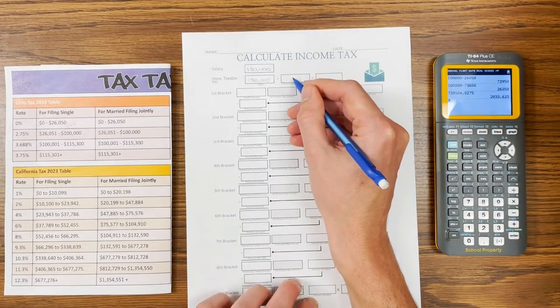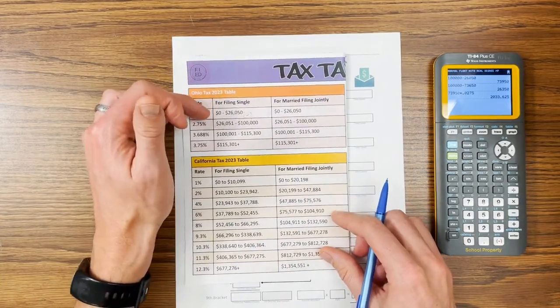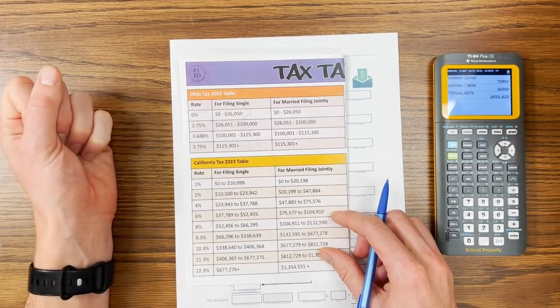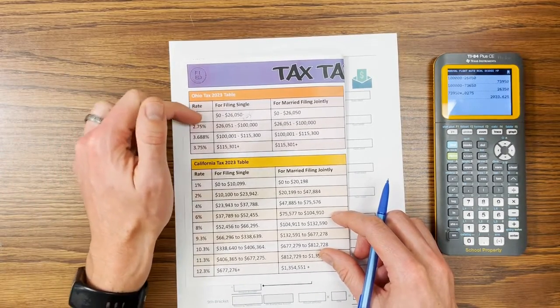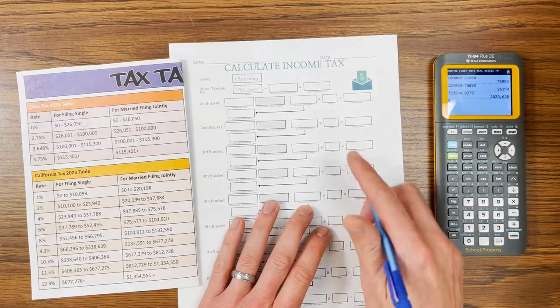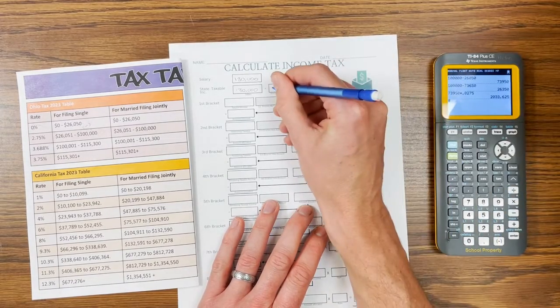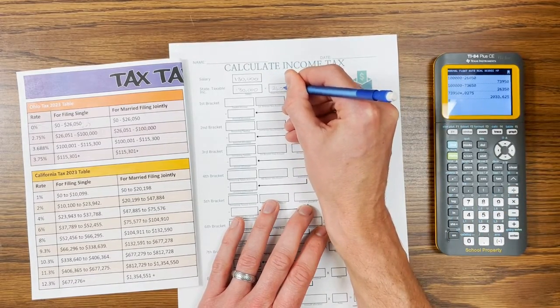The state standard deduction. So we go to our tables. Remember, Ohio doesn't technically have a state standard deduction, but they're really saying that their first bracket is a standard deduction. I like putting it up here because it just fits in nicely with the other states as well. But you could also make your first bracket a 0% bracket. So $26,050.